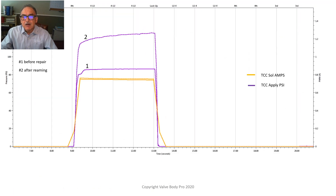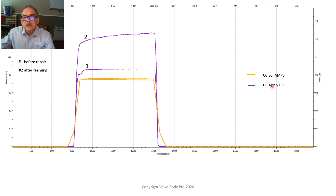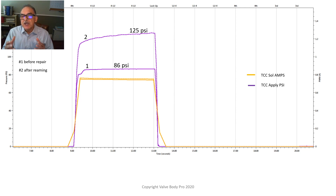When they sent us the valve body, what you're seeing is the test results after we tested it. Test number one is before we repaired it, and test number two is after we reamed it. The purple represents the TCC clutch applied pressure, and the orange represents the TCC solenoid amps. Before we repaired it, the valve body was only producing a maximum of 86 PSI of TCC applied pressure. After we reamed and repaired it and tested it again, it came out to 125 PSI — about a 40 PSI difference.